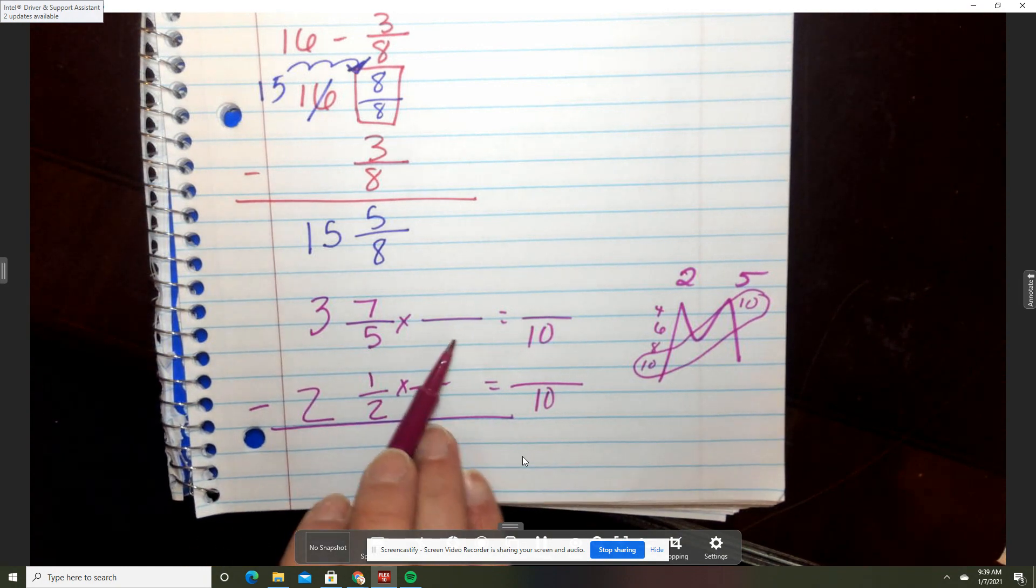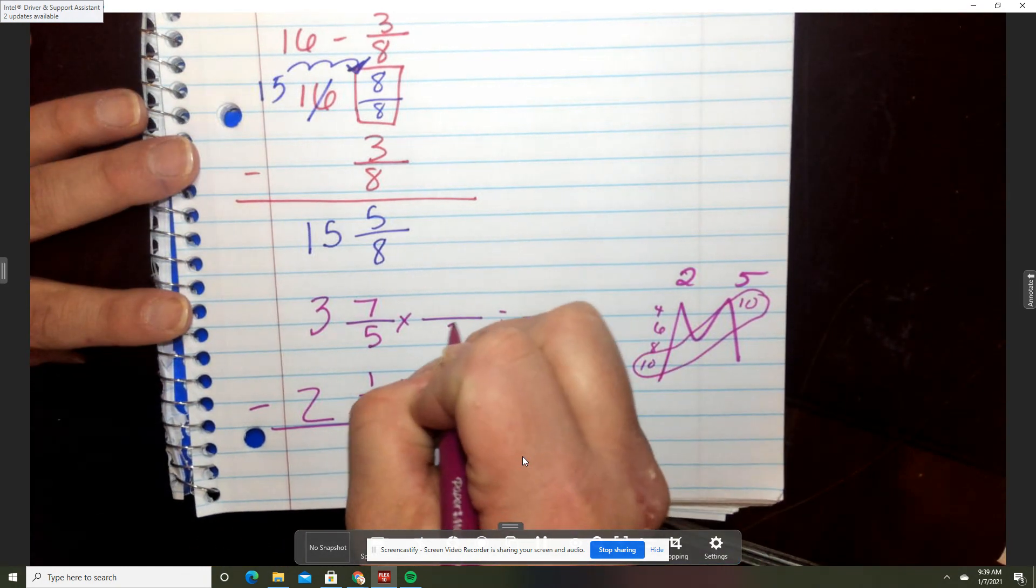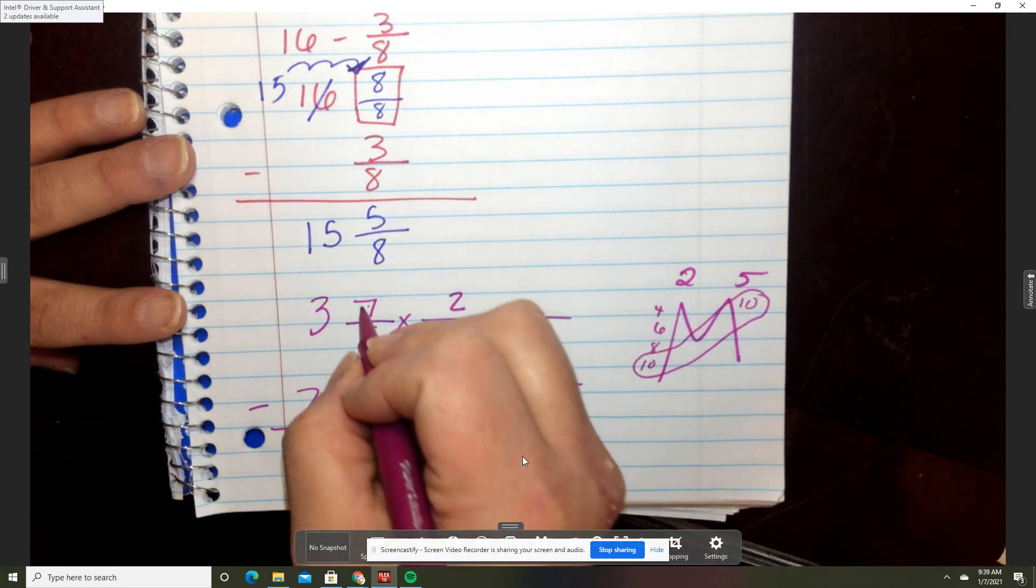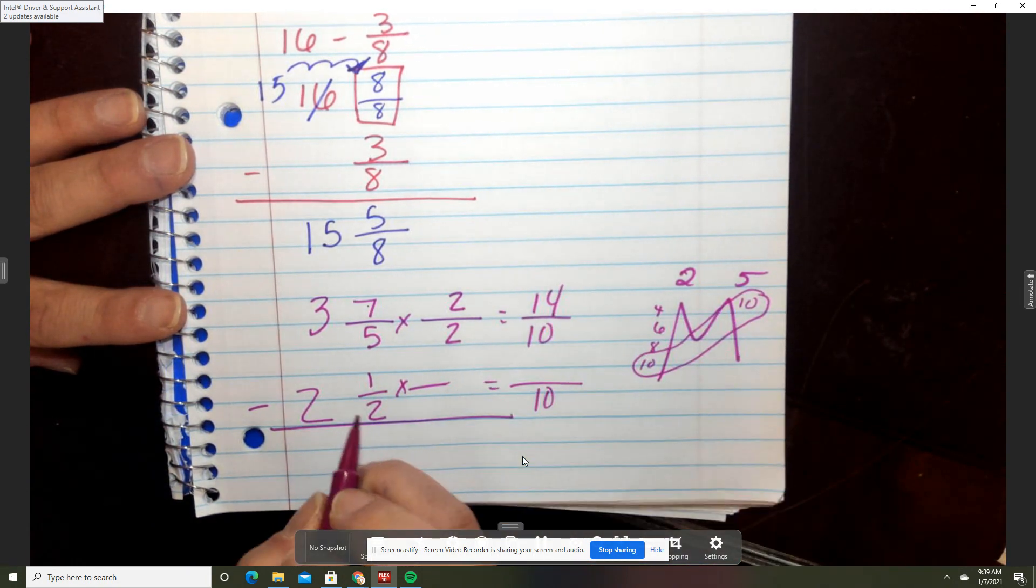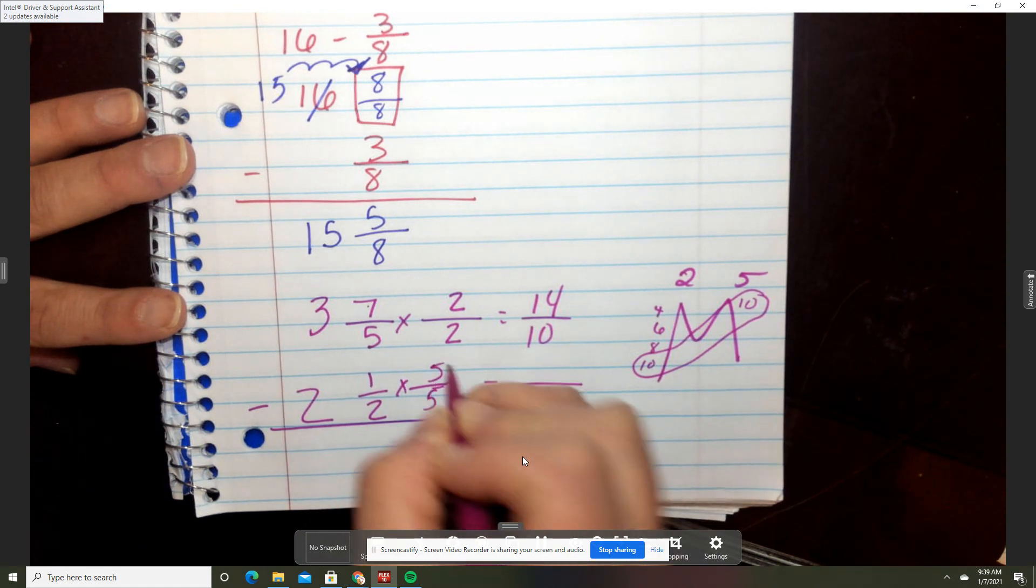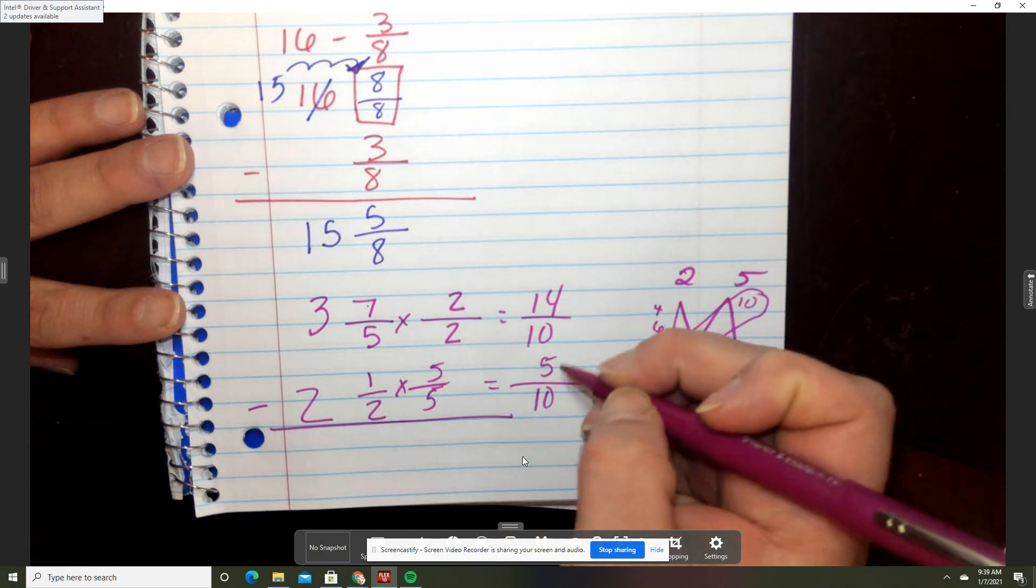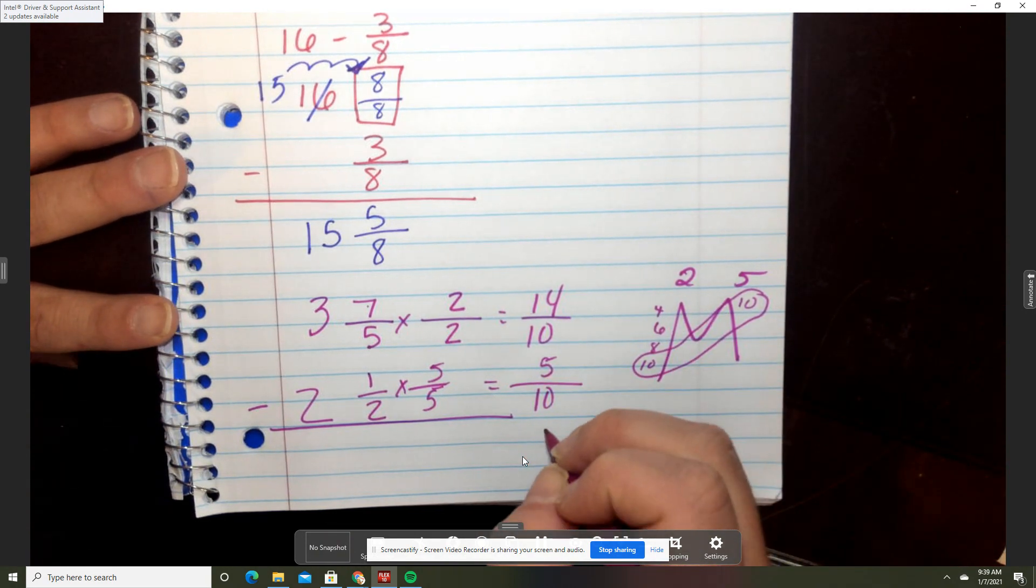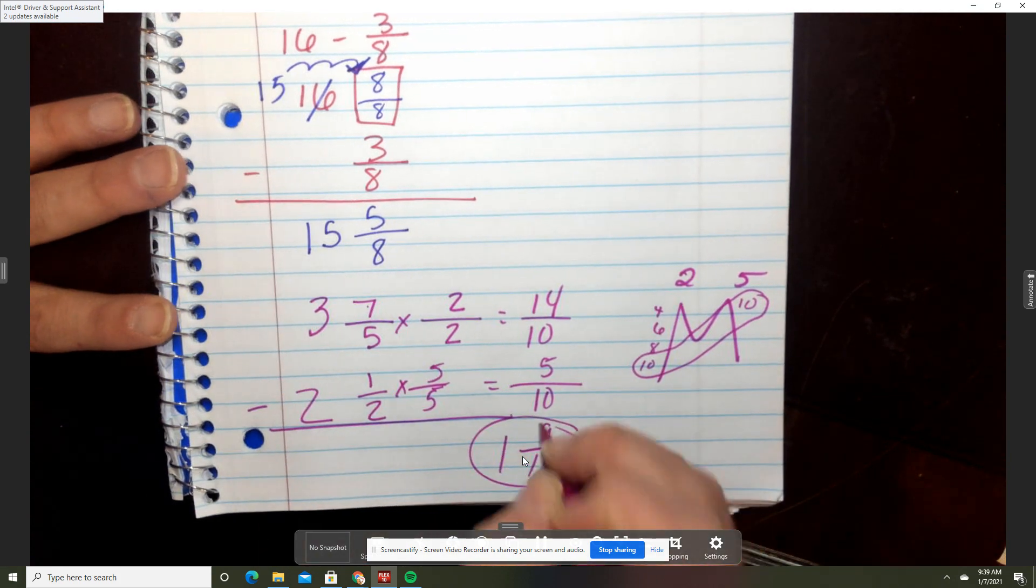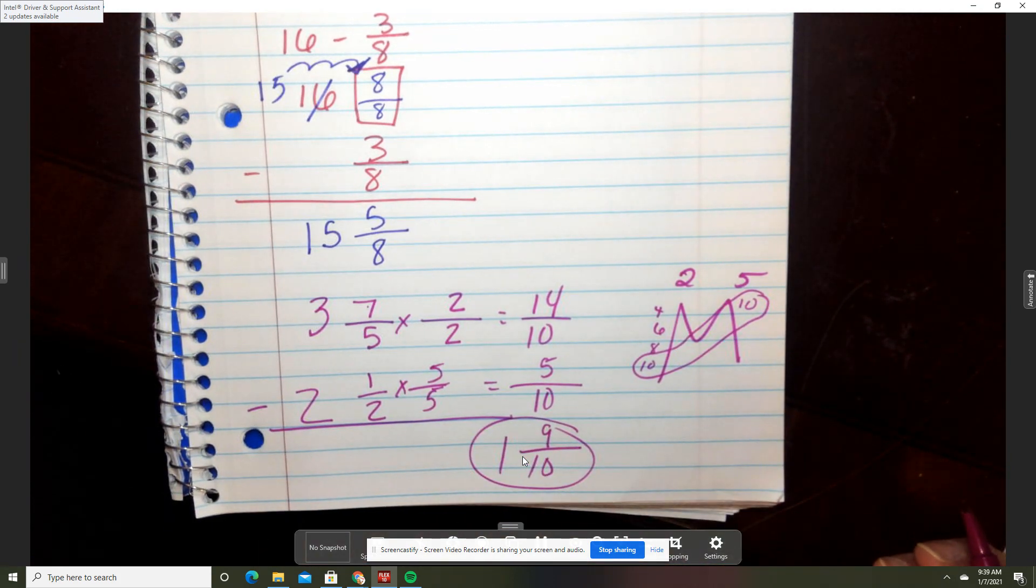Okay, five times what got me ten? That would be two. Once you go to the bottom, you do to the top. Seven times two is fourteen. Two times five got me to ten. Once you do the bottom, you do to the top and that is five. Fourteen minus five is 9/10. Three minus two is one. Okay, so that's your answer for that one.